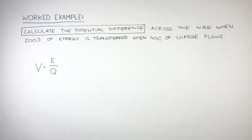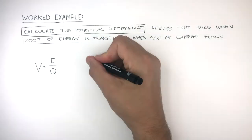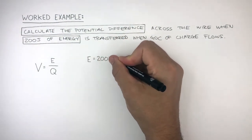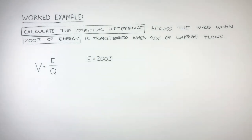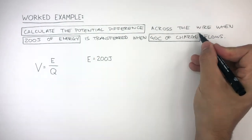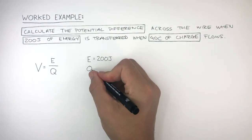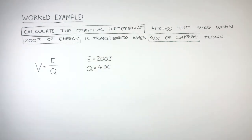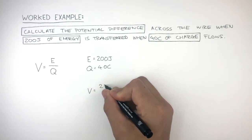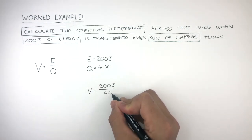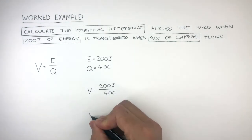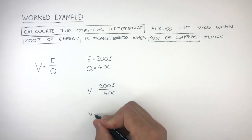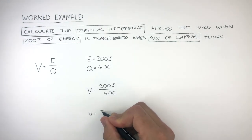The question tells us 200 joules of energy has been transferred, so we write E equals 200 joules. The question also tells us 40 coulombs of charge flows, so we write Q equals 40 coulombs. We can now input this into the equation where V equals 200 joules divided by 40 coulombs. Therefore V, the potential difference, equals 5 volts.